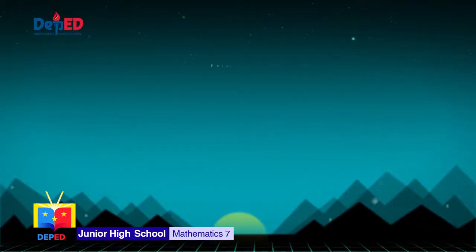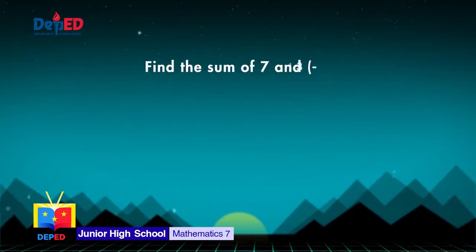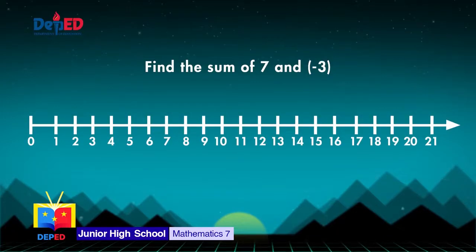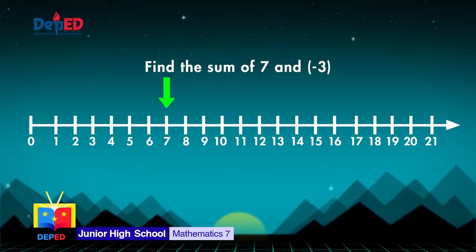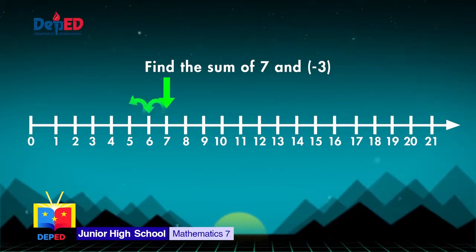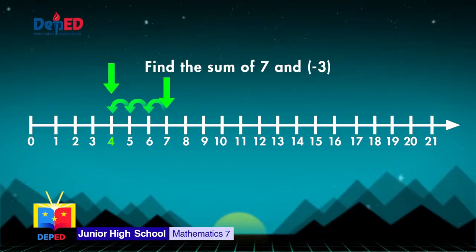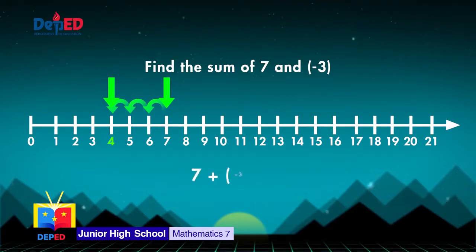Now, find the sum of 7 and negative 3. On the number line, start from 7. And since the sign of 3 is negative, count 3 units to the left: 1, 2, and 3. It stops at 4. Hence, 7 plus negative 3 is equal to 4.